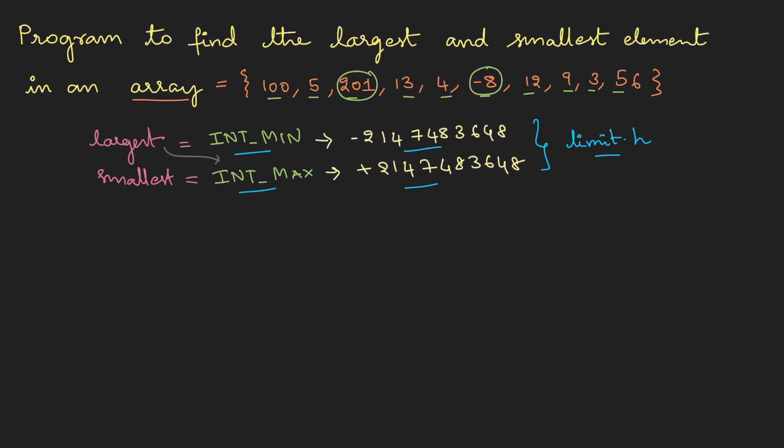So we have assigned the largest and smallest initial values. The next thing is we will be using a for loop, where I start from zero, i has to go on till the array size and keep on incrementing. Now in this particular loop I will be using an if condition: if smallest is greater than the array element, then immediately change the smallest value to the array element.